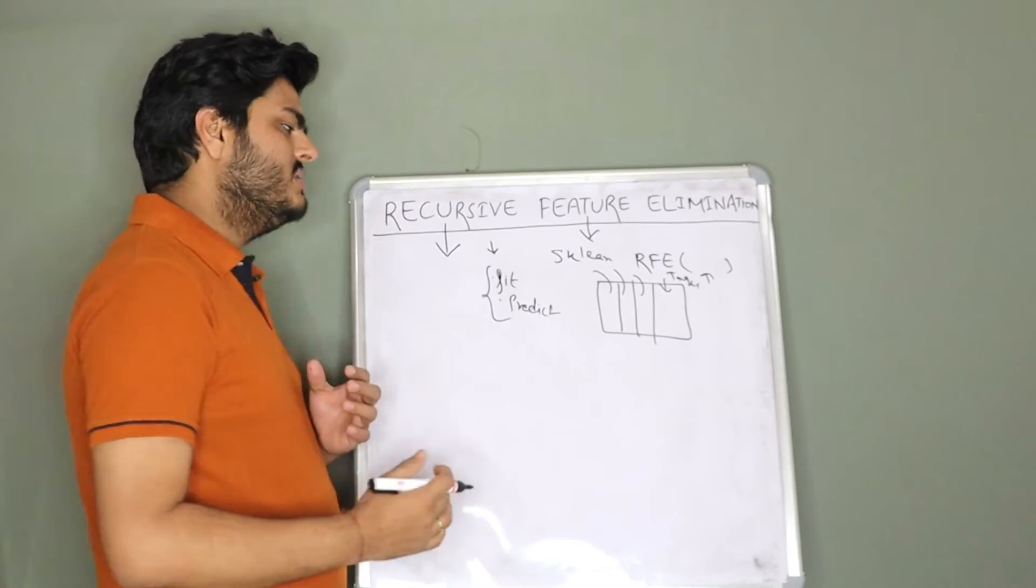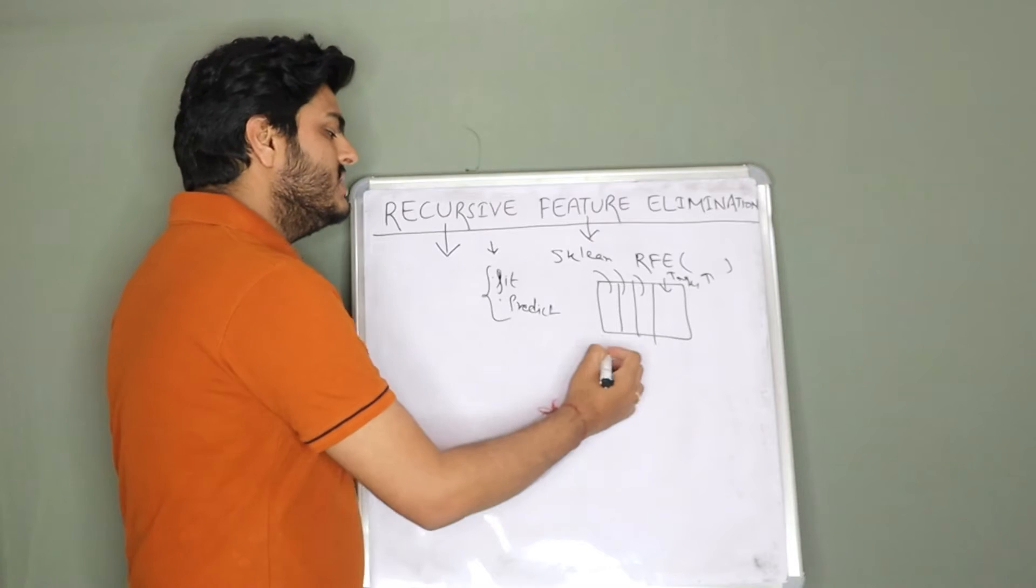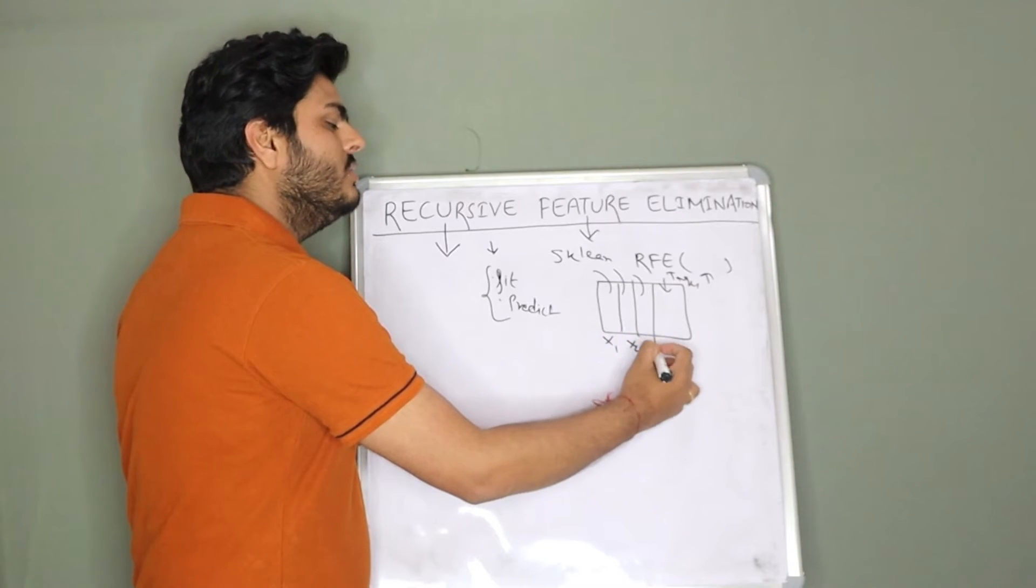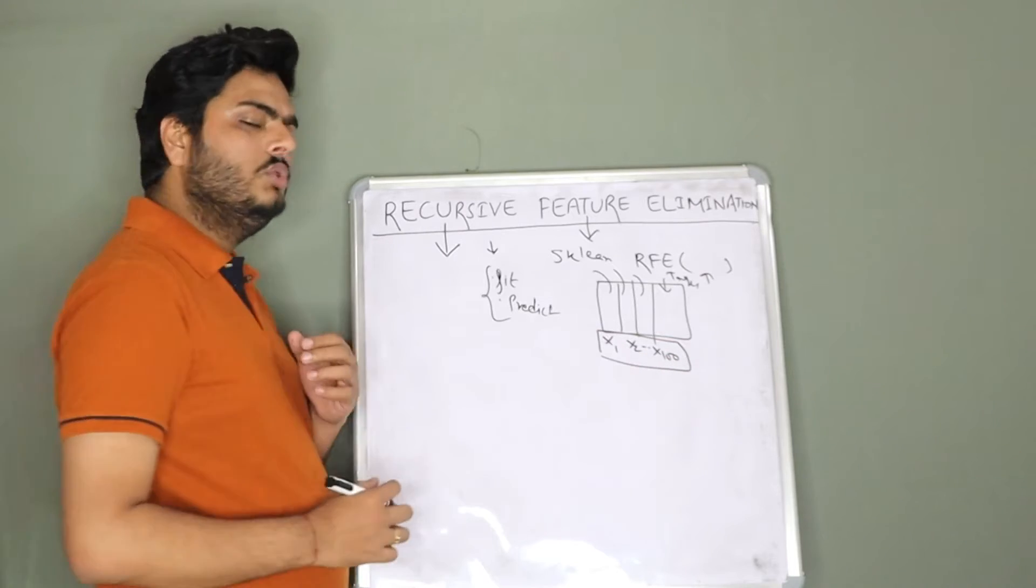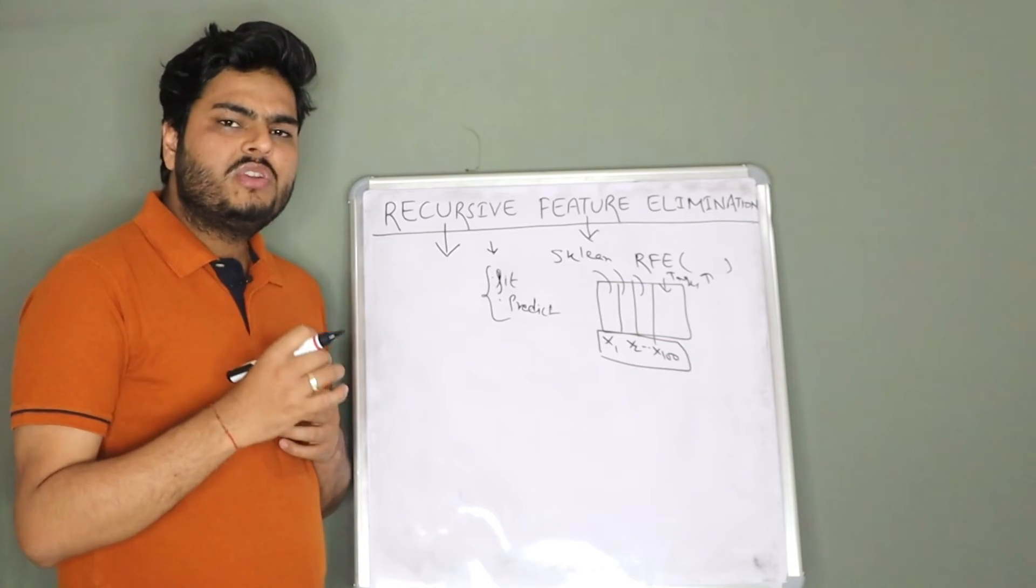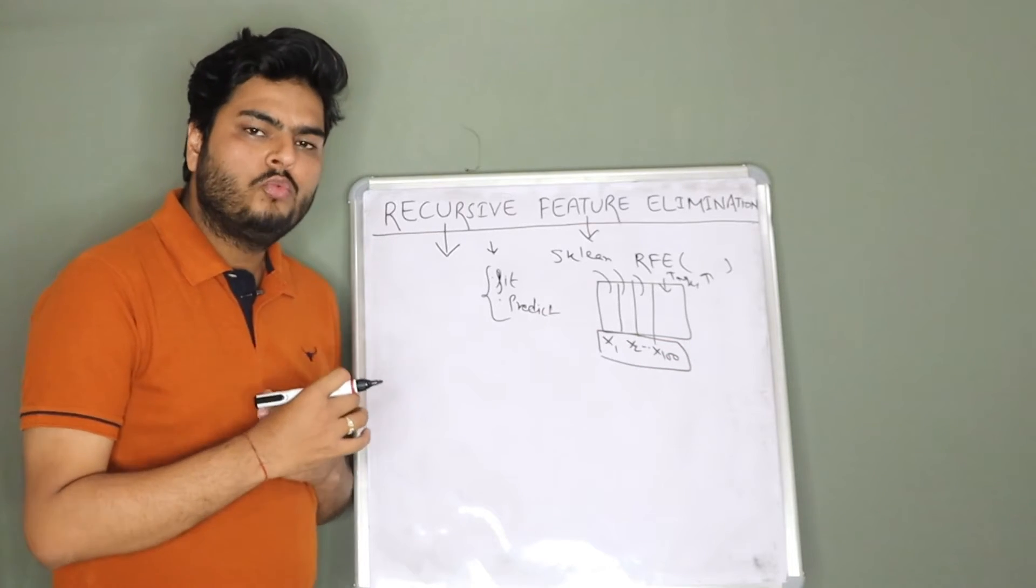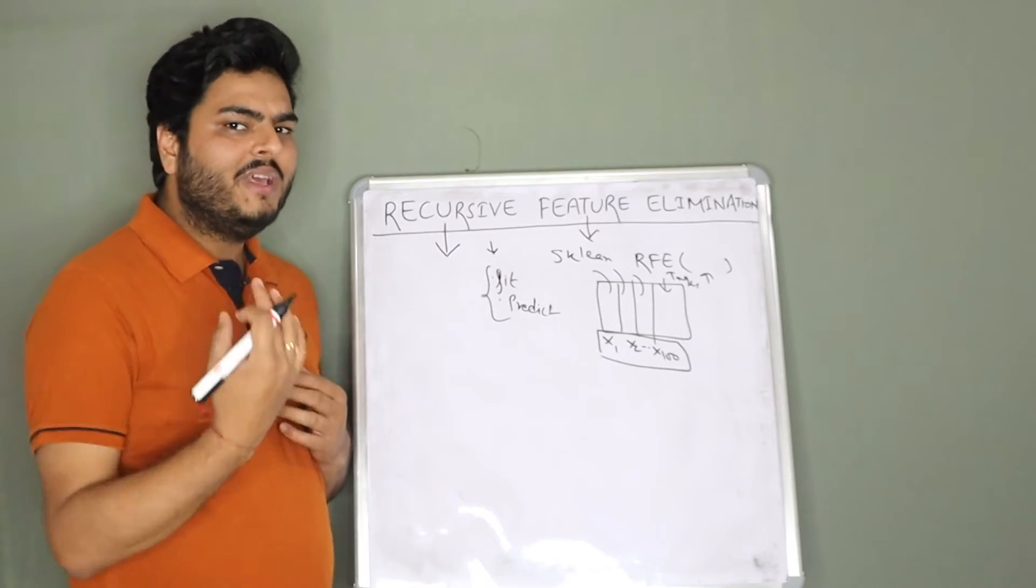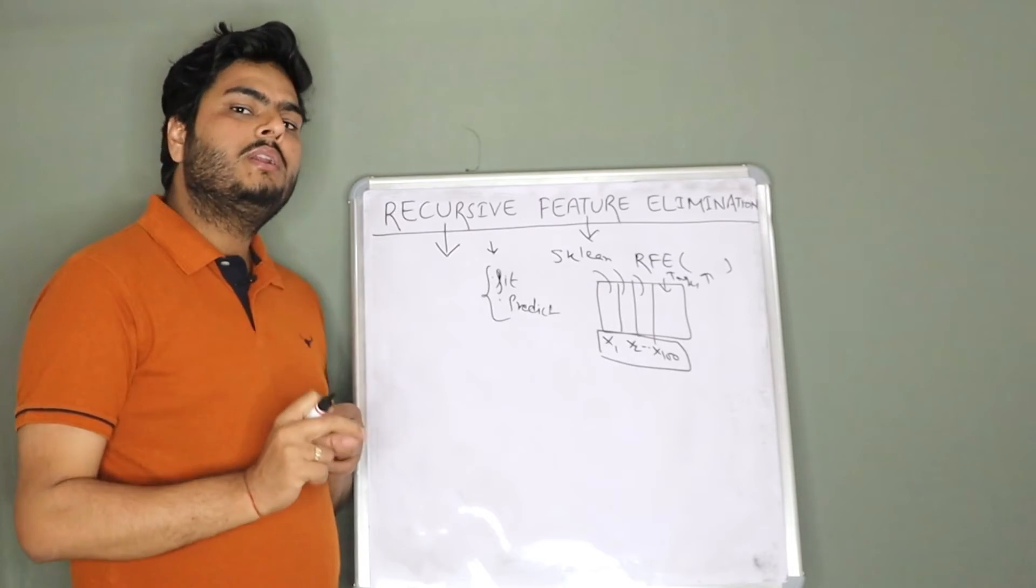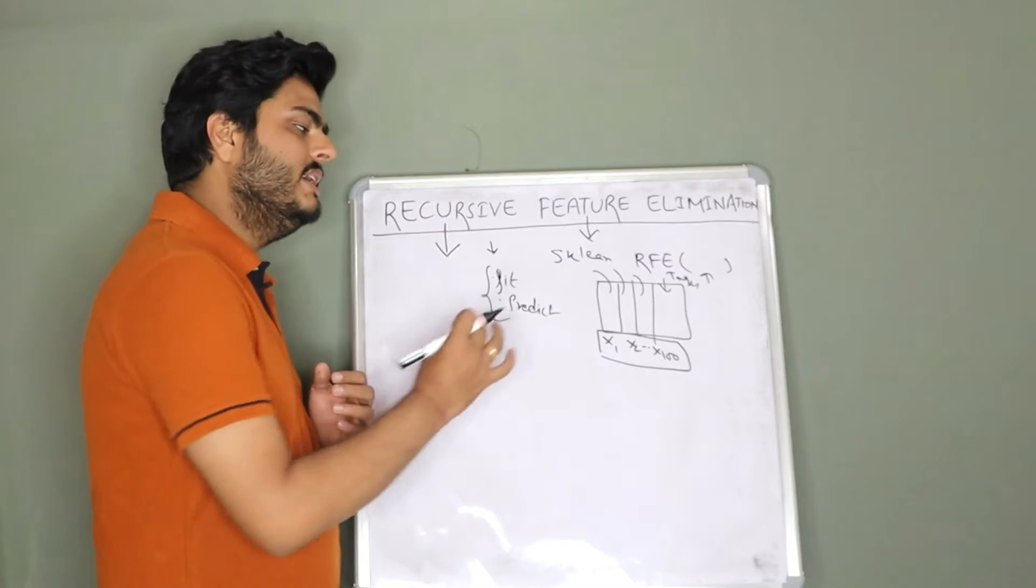Obviously we will start with many features. For example, this can be x1, this can be x2, it can go till x100 let's say. What we want to do is we want to use just the best minimal features for our machine learning model so that our model is not very complex. At the same time model learns the pattern well from the data.